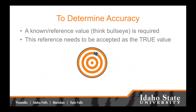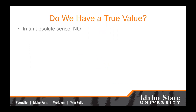To determine accuracy, a known reference value — think of the bullseye — is required, and this reference needs to be accepted as the true value. There's oftentimes some discussion about what is the true value, but it's not too terribly difficult to come to some sort of agreement about what is the true elevation value somewhere around Idaho. In a very much absolute sense, with 100% certainty, the answer is no — we do not have a true value. We do not have the sensor capabilities to measure to the nanometer out in the field, but we probably don't need that.